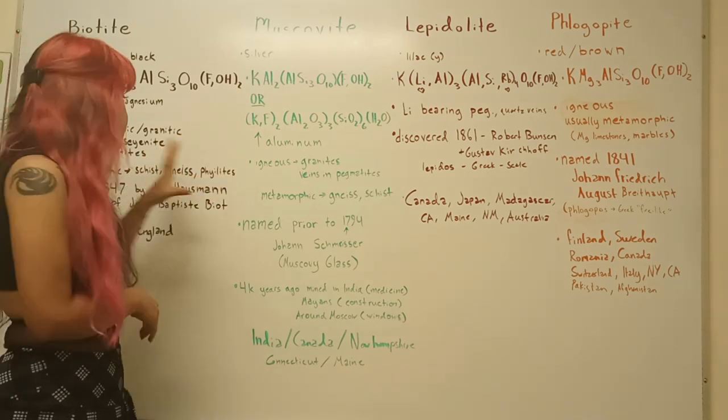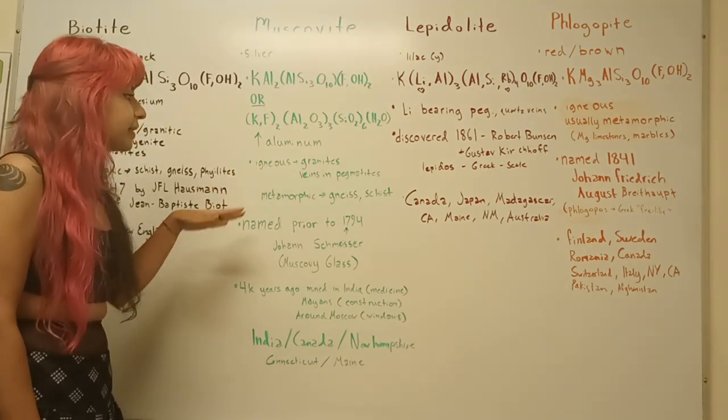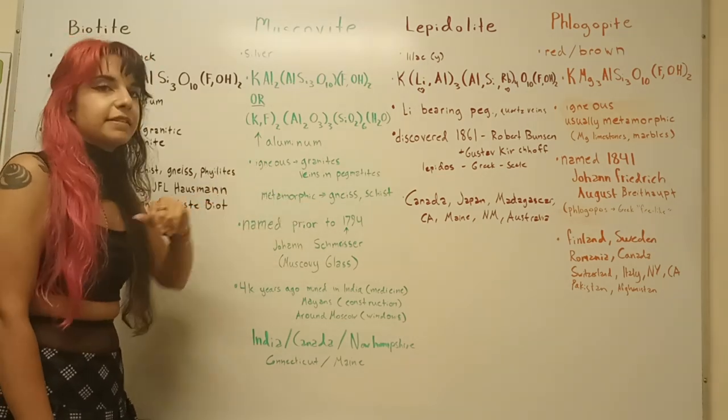And so you can find it in similar places. Igneous rocks, granites, veins, and pegmatites. And then you can find it in metamorphic rocks and gneisses and schists.